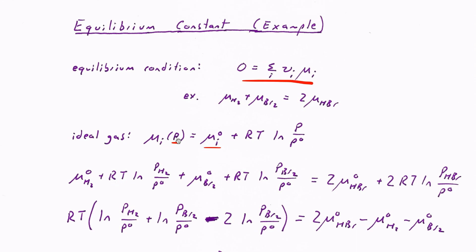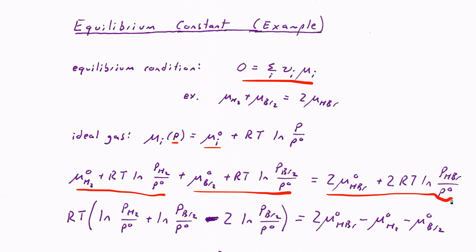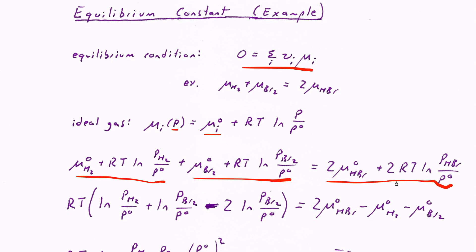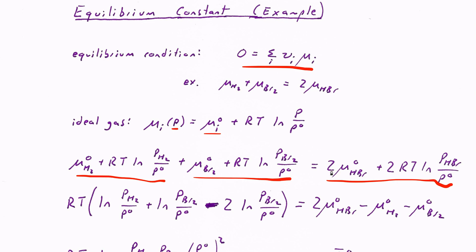If I take that result for the chemical potential of an ideal gas and insert it into our equilibrium condition for H₂ and Br₂ — where the chemical potential of H₂ plus the chemical potential of Br₂ adds up to twice the chemical potential of HBr — I can collect terms by moving the standard chemical potentials to the right-hand side, giving twice μ°(HBr) minus μ°(H₂) minus μ°(Br₂), all under standard conditions.